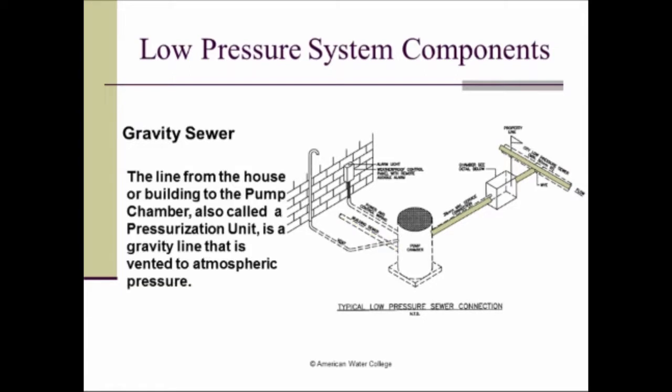What are the parts or the components of the system? Well, first we have the gravity sewer, which is the line that comes from the house or the building that goes to the pump chamber. That pump chamber is also called the pressurization unit. And it's a gravity line that's vented to atmospheric pressure. So this first portion that's in red is a gravity line from the building to the pump chamber or the pressurization unit.